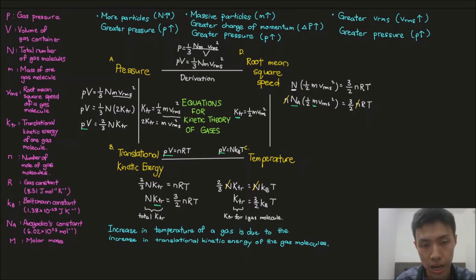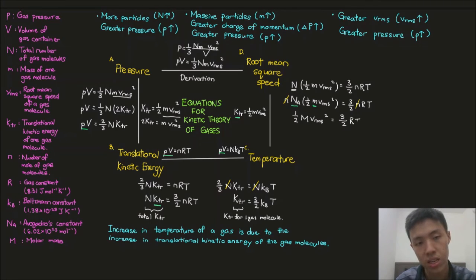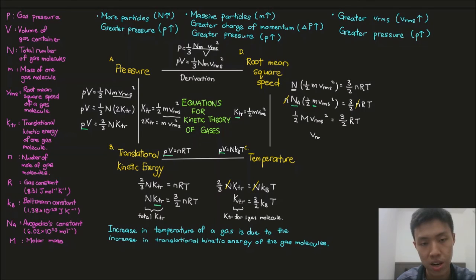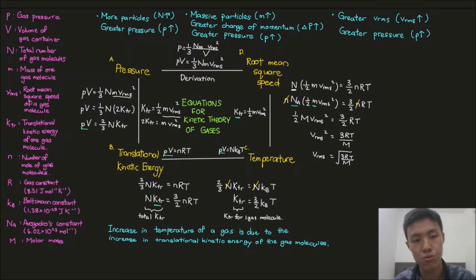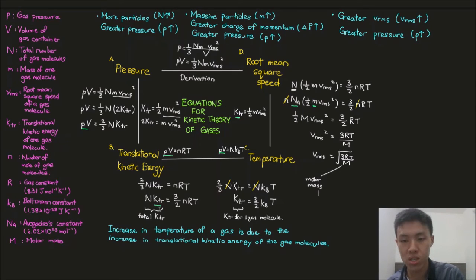After substitution we have: half times capital M times V_rms squared = 3/2 RT. Moving everything to isolate V_rms, we get V_rms squared = 3RT over capital M. Taking the square root of both sides gives us: V_rms = square root of (3RT / M), where capital M is the molar mass. This is the equation relating root mean square speed and temperature using per-mole quantities.